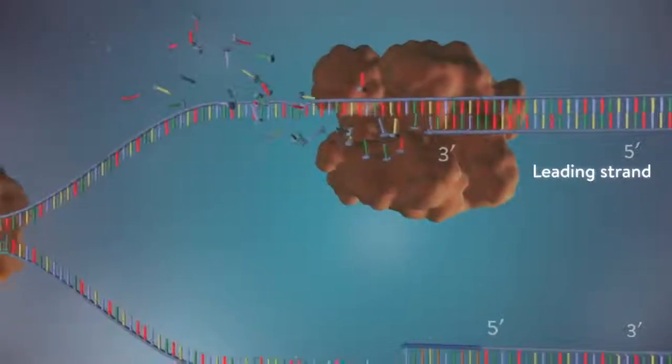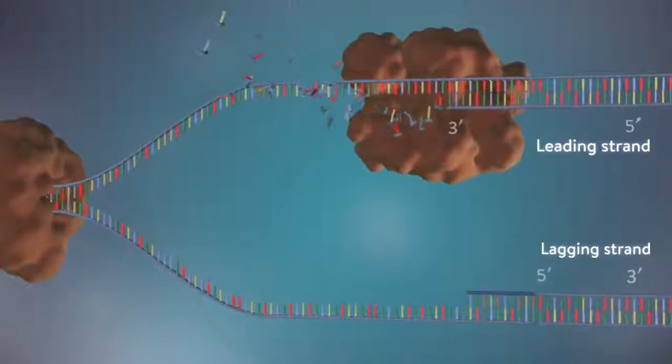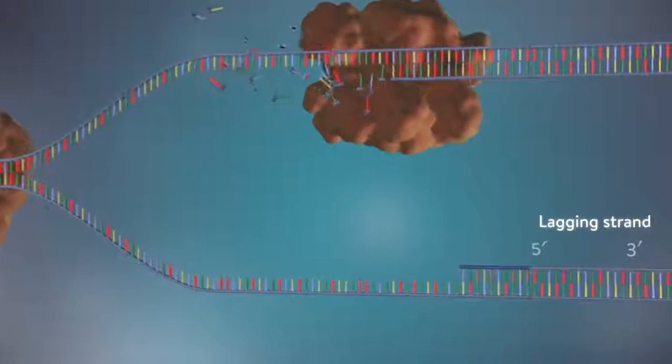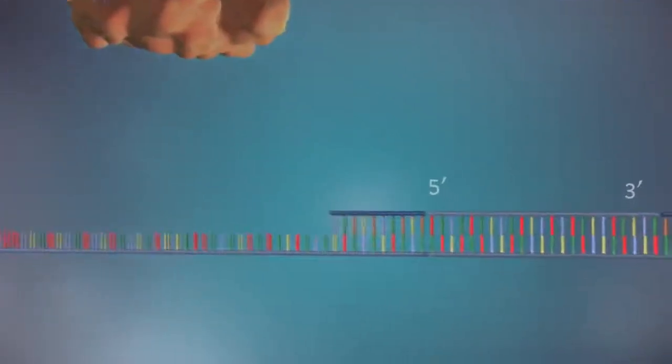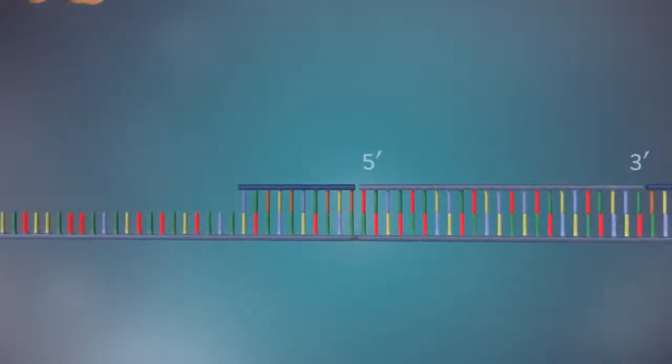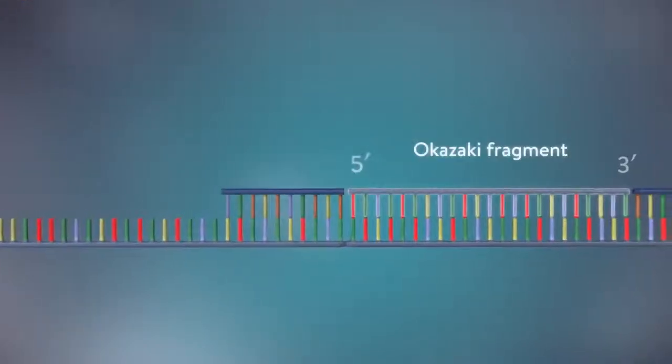The other strand, the lagging strand, cannot be made in this continuous way because it runs in the opposite direction. The DNA polymerase can therefore only make this strand in a series of small chunks called Okazaki fragments.